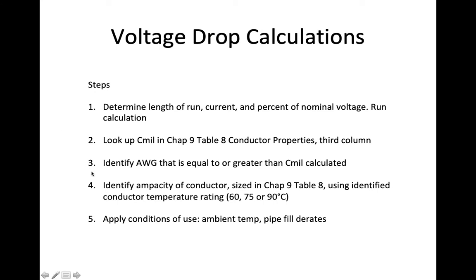Step 3. Identify the AWG, or the gauge size, that is equal to or greater than the Cmil calculated in my equation. Number 4. Step 4. Identify the ampacity of the conductor, sized in Chapter 9, Table 8, using identified conductor table ratings of 60, 75, or 90.